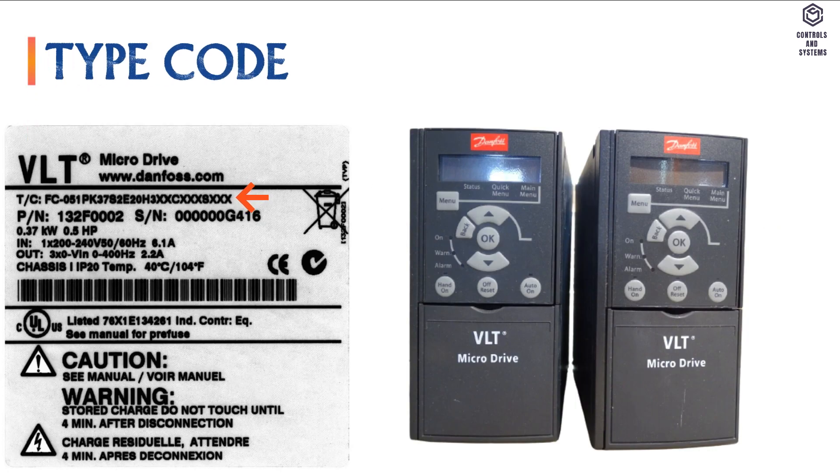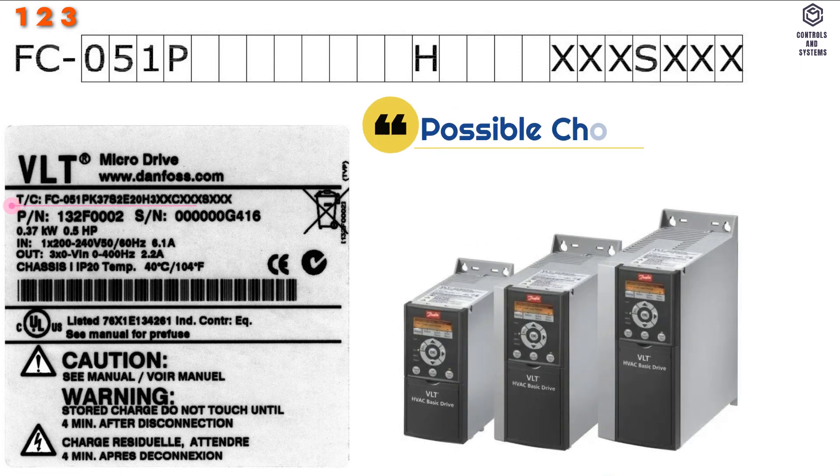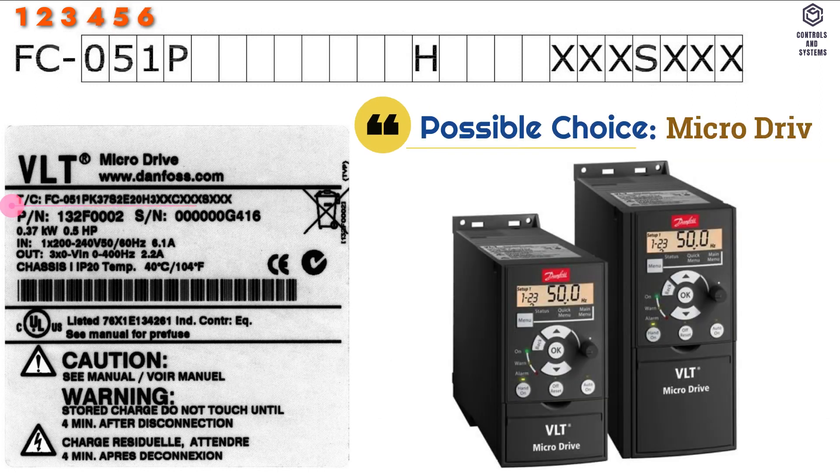First row is type code. Position 1 to 3 is product group, possible choice is frequency converter. Position 4 to 6 is series and product type, possible choice is micro drive.